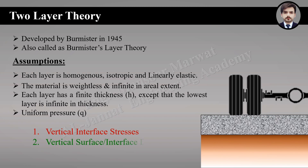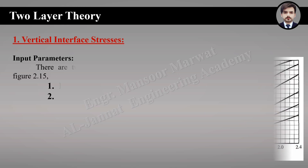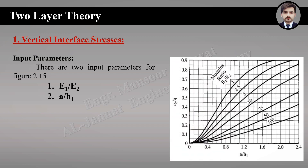In two-layer theory, we will discuss how to determine vertical interface stresses, vertical surface and interface deflection, and critical tensile strain. Vertical interface stress is an important factor in pavement design because such stresses are used to prevent the pavement from rutting. The reference figure for vertical interface stresses is Figure 2.15, having two input parameters: the modulus ratio E1/E2, and the radius-to-thickness ratio.